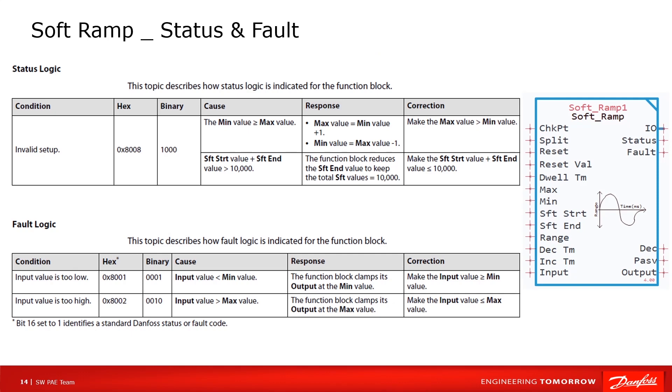There are also output pins of status and fault on this function block. We can read binary data 0x8000 in the status pin when parameter's configuration is incorrect. We can read binary data 0x0001 or 0x0002 when input too low or too high.